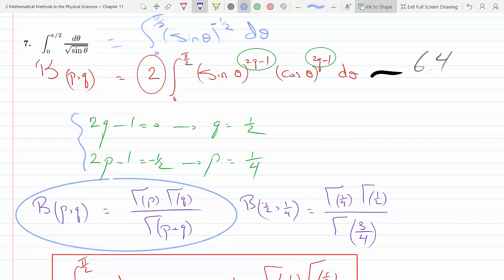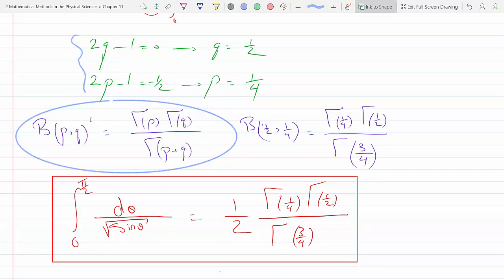Now I could use equation 7.1, which converts beta to gamma functions. So B(1/2, 1/4) equals Γ(1/4)Γ(1/2) over Γ(3/4).